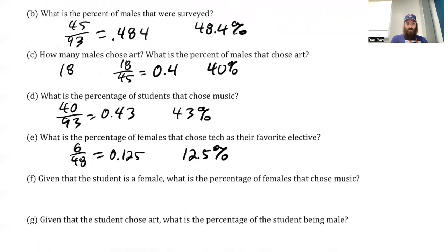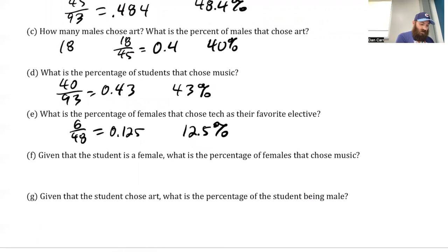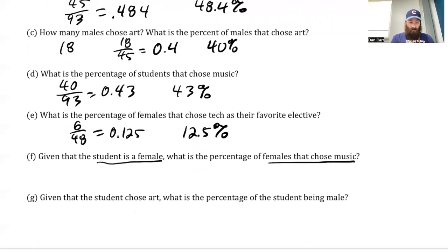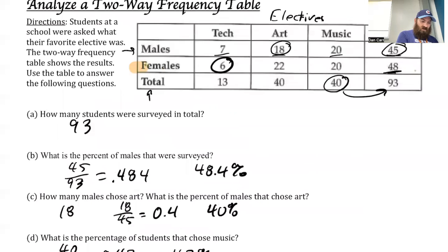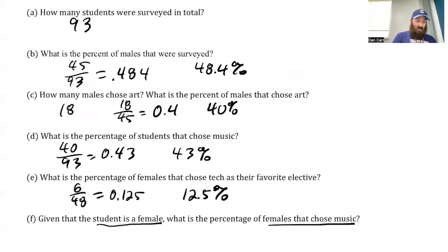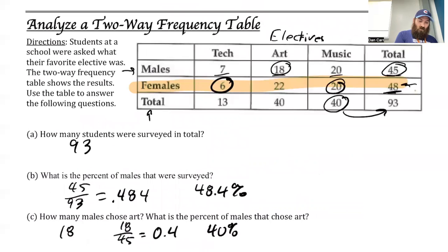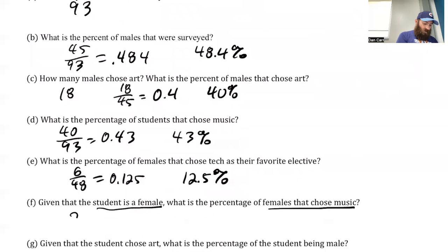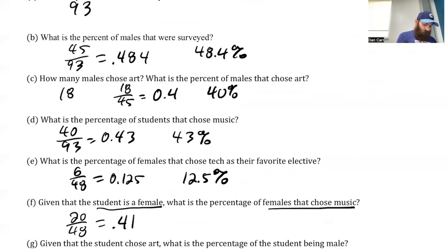These are a little bit trickier questions. Given that a student is female, what is the percentage of females that chose music? We're focusing in on just this row. So what percentage of females chose music? Music was 20 out of the total of 48. So we get 20 out of 48, and that is going to equal 0.417, which means that's 41.7%.